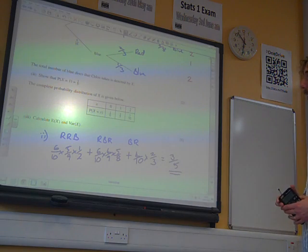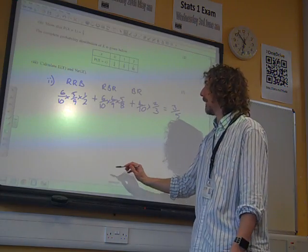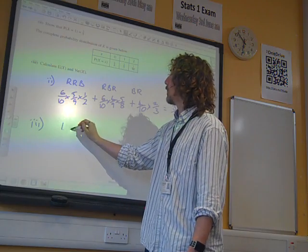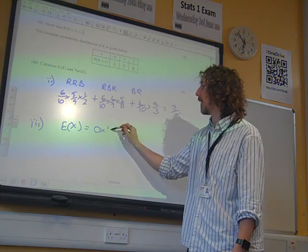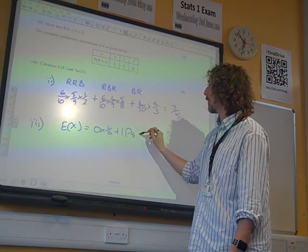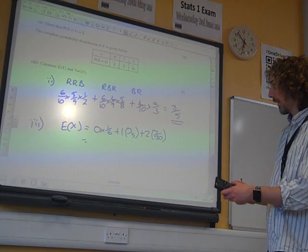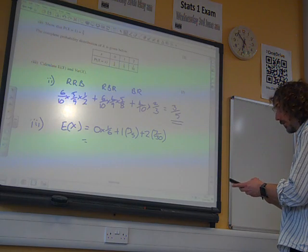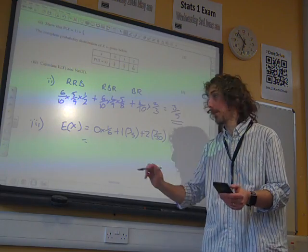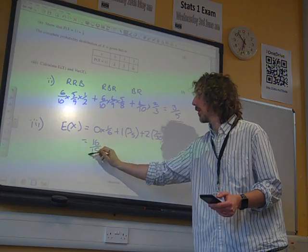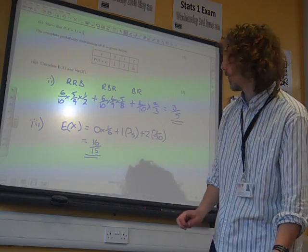The probability, complete probability distribution of x given below, calculate e of x and variance of x. Well, a nice way to end the question. So, e of x is what we get if we multiply the x value by the probability. So zero times a sixth plus one times three fifths plus two times seven thirtieths, giving us, I think, sixteen fifteenths. Do you agree with that? Nobody's worked it out. Yep, I think we agree with that.